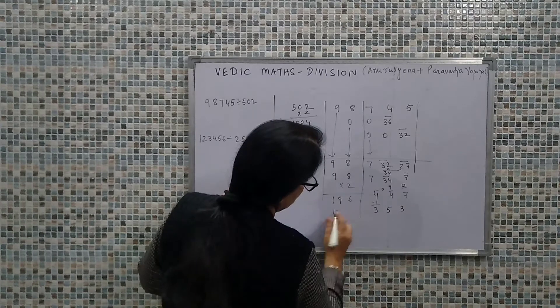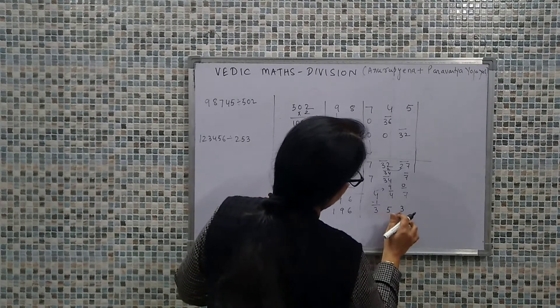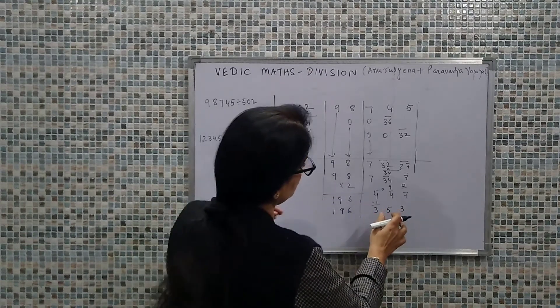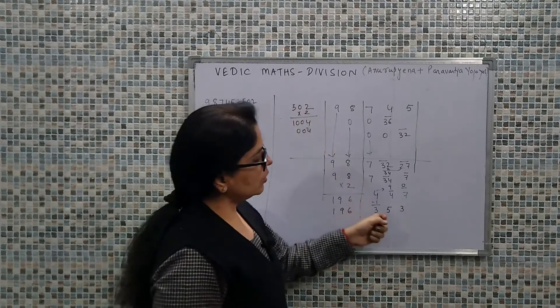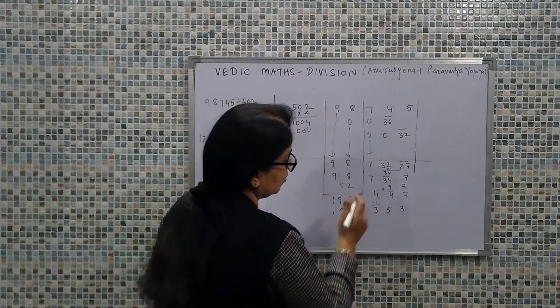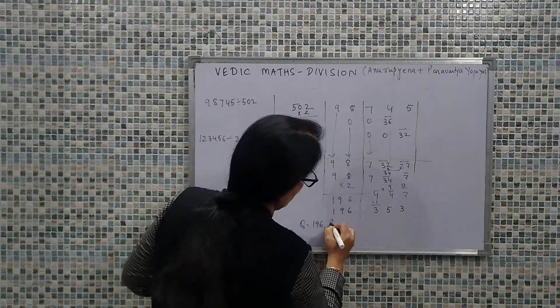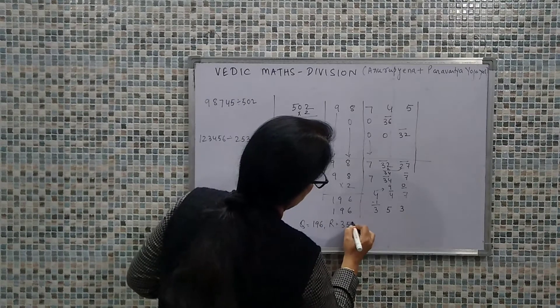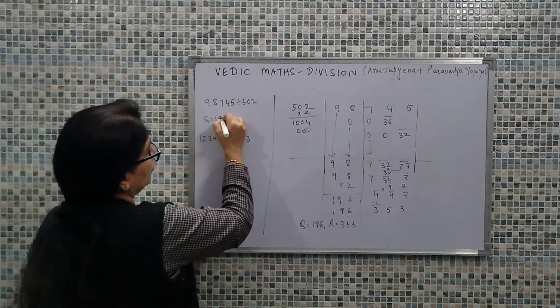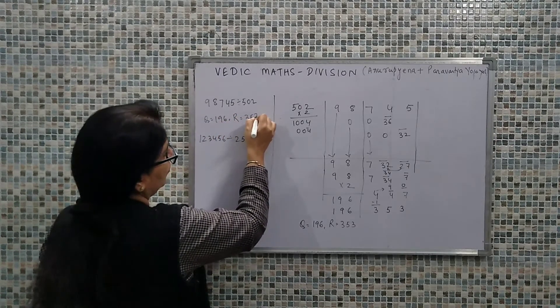So our quotient becomes 196 and remainder is 353. Let's observe: is 353 the remainder? Is it less than the divisor? Our divisor was 502. It is less than the divisor. So finally we come up to the answer that the quotient is 196 and the remainder is 353.